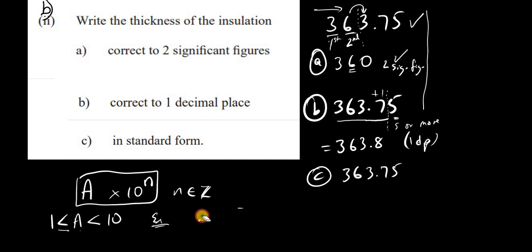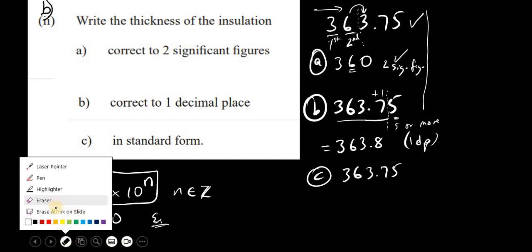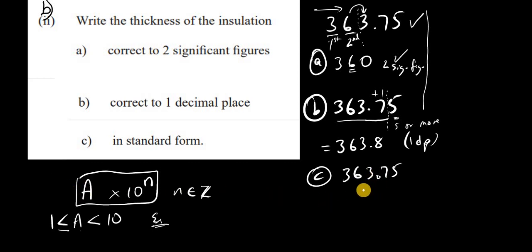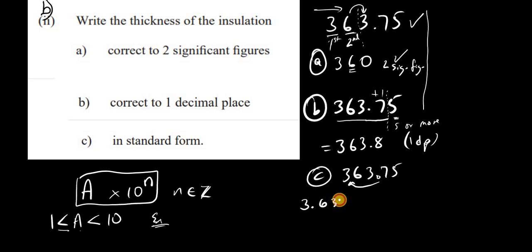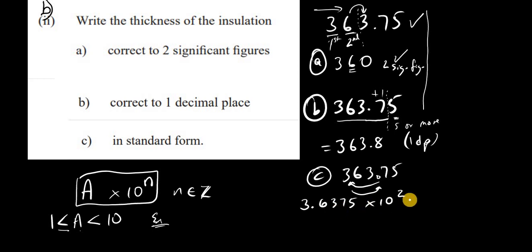Now for our number 363.75 in standard form: we shift the point after the first significant figure, giving 3.6375. We write the significant figure 3 first, then the point, then the other digits: 6, 3, 7, 5. We moved 2 places, and since the original number is greater than 1, we use a positive power — so the answer is 3.6375 × 10².